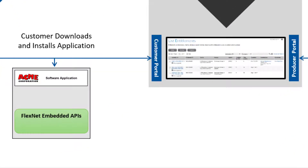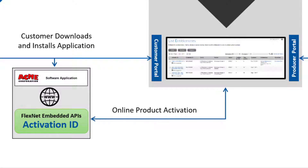The software can be downloaded by the customer via the FlexNet Operations customer portal or provided to the customer by another means. Electronic software delivery configuration will not be covered in this video. Once the customer has installed the software that has been instrumented with FlexNet Embedded APIs, they are then typically prompted to enter their activation ID. This activation ID, along with additional device information, will be programmatically sent to FlexNet Operations, which will return one or more licensed features that are securely stored on the device.